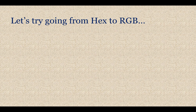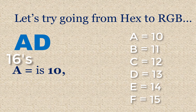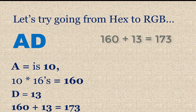Let's try going from hex to RGB. Here's a hex value: AD. A is 10 in our hex scheme — it goes up to 9, then A is 10. So if there are 10 sixteens, that's 160. Then D is 13 — counting A, B, C, D gets to 13 — so there are 13 ones. 160 plus 13 equals 173. So AD in hex is equivalent to RGB 173.